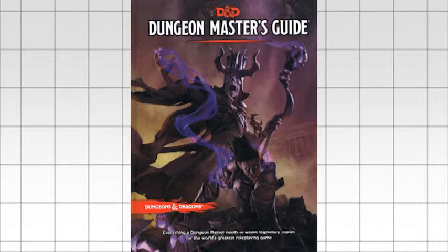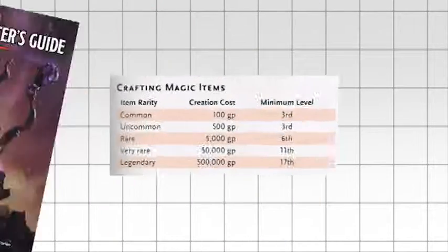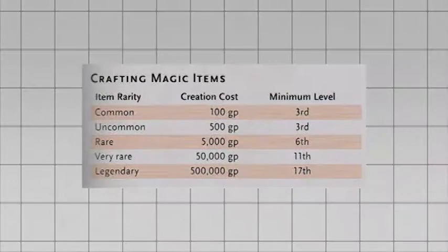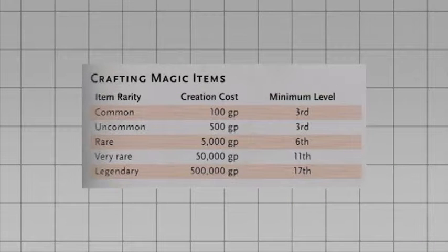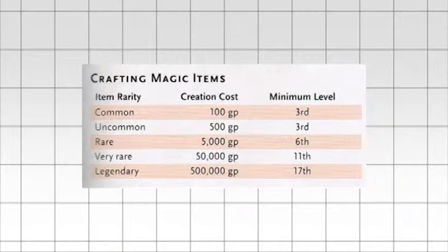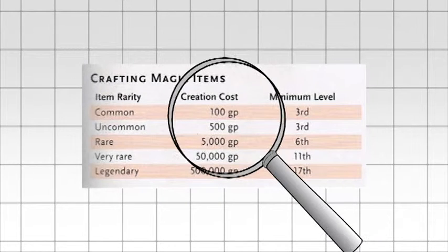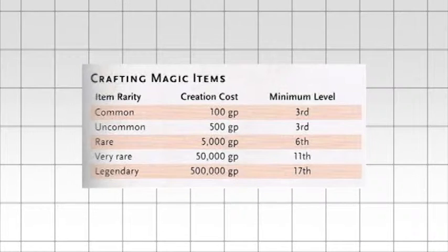But there is another option. In the DMs guide, there's a handy little table called Crafting Magic Items. Let me tell you a little secret. This table's freaking dumb. It costs 500 gold to create an uncommon item. This table's terrible. I mean, the sell price is 500 gold, and that's if you roll good. That table doesn't really make much sense to me.